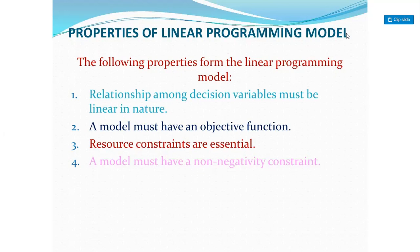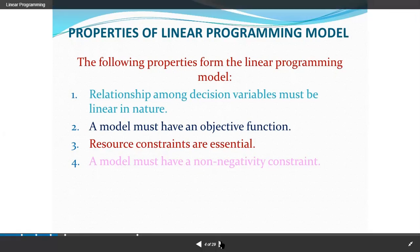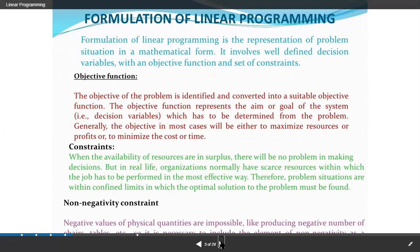The main characteristics or terms used in linear programming are: decision variable, objective function, constraints, alternatives, linearity, and non-linearity. When we construct and formulate a problem, in the formulation of a linear programming problem, the first thing given is the objective function.